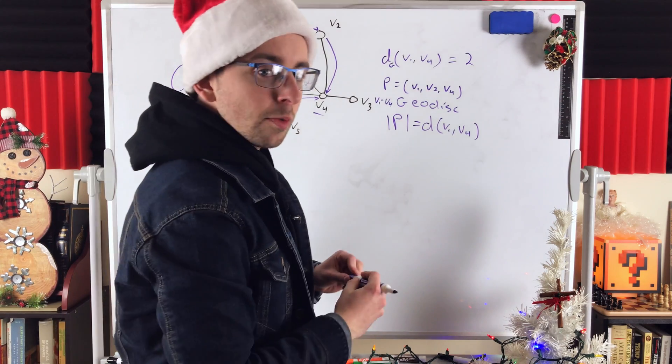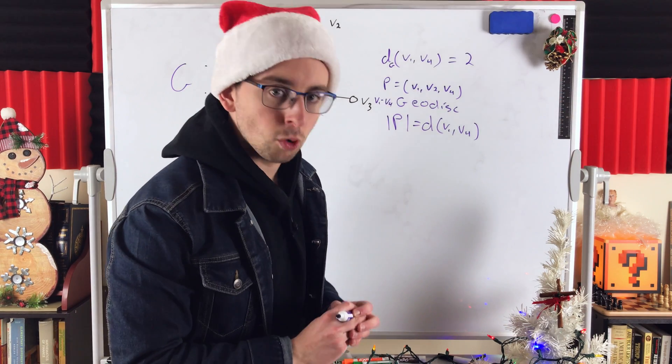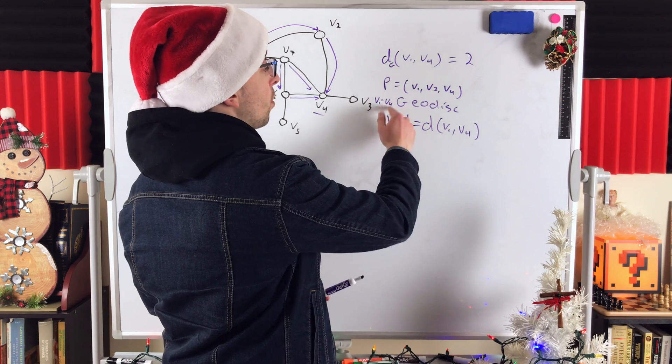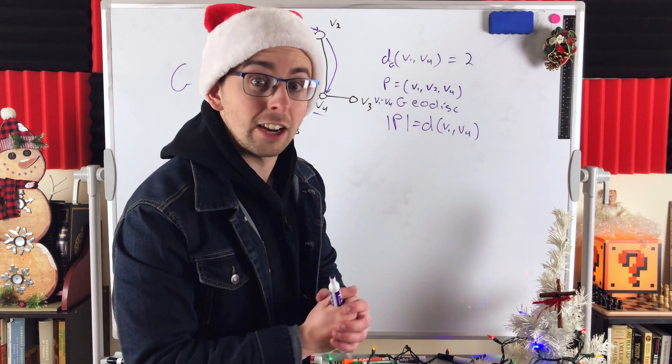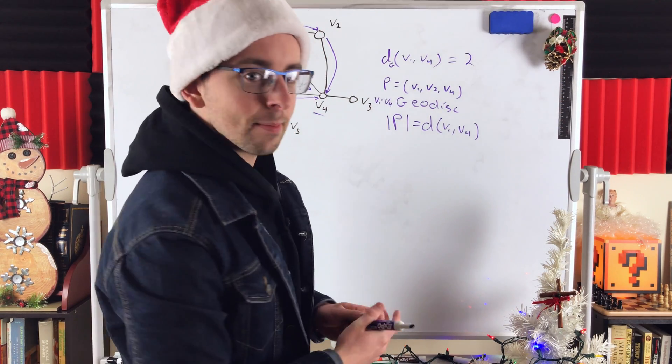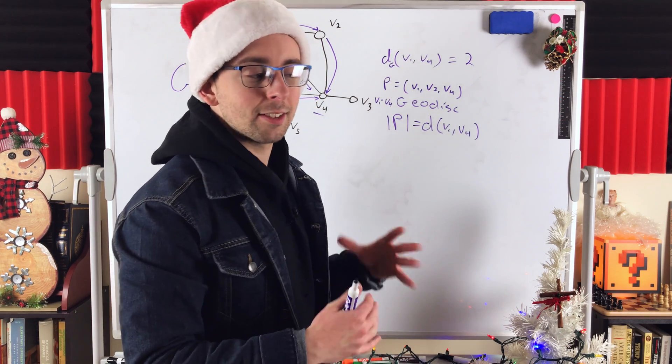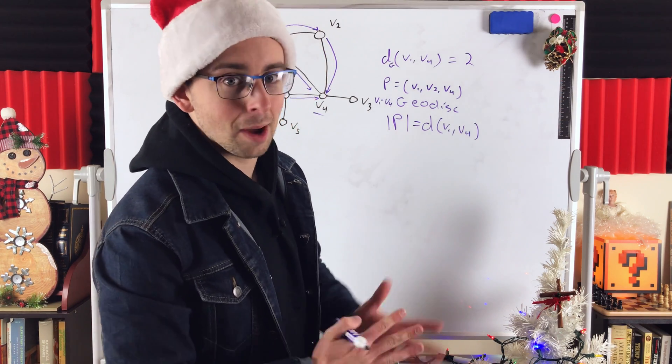So, the distance between two vertices is the length of a shortest path that connects them. A geodesic between two vertices is a shortest path that connects them. These concepts are really handy. We use them a lot in some of the proofs we'll do going forward. They'll come up a lot.